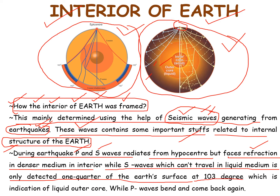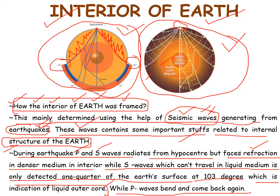Here you can see the S wave is located on one fourth of our Earth's seismic wave movement, at a 103 degree angle. This indicates that there is a liquid core inside the Earth, while P waves bend and come back again. Here you can see the P waves come, go, bend and come back again.